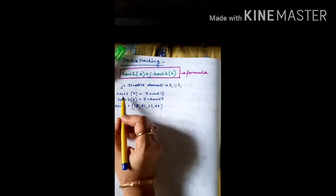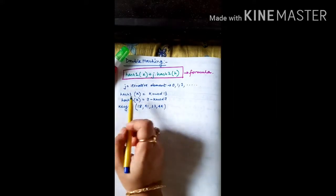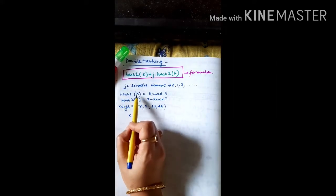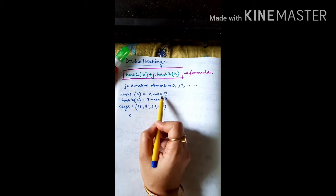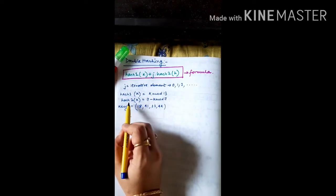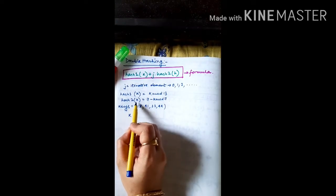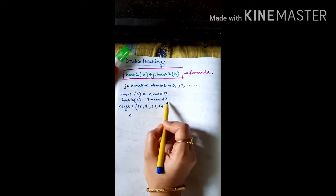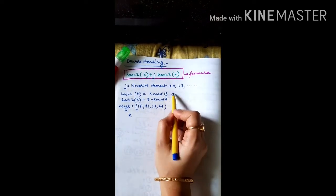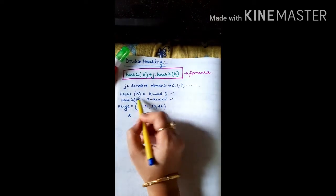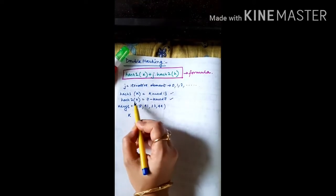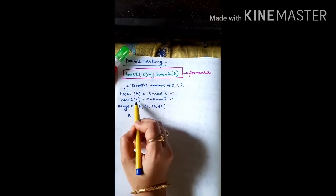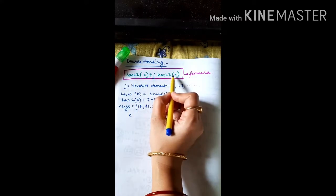Suppose a sum is given where hash function 1 of k is k mod 13, and hash function 2 of k is 7 minus k mod 7. These are the two hash functions — hash function 1 and hash function 2 — which are provided.